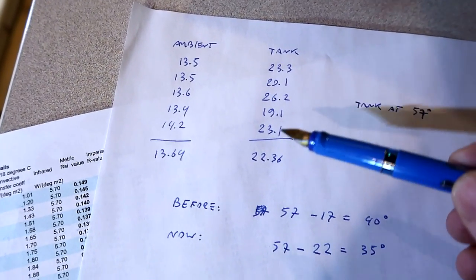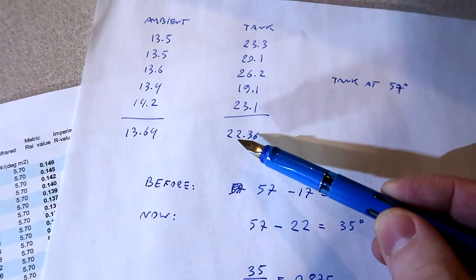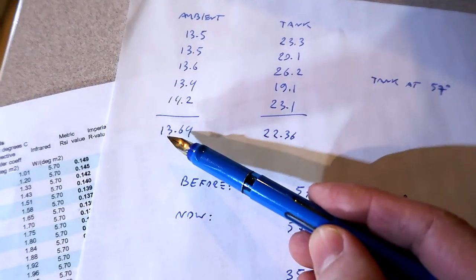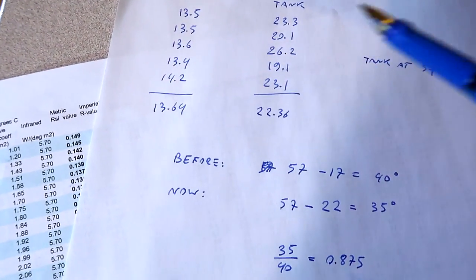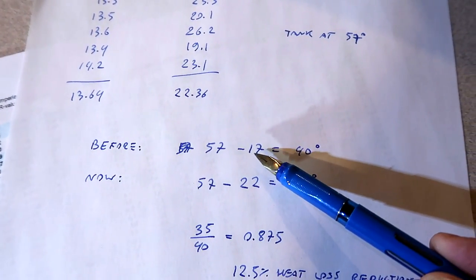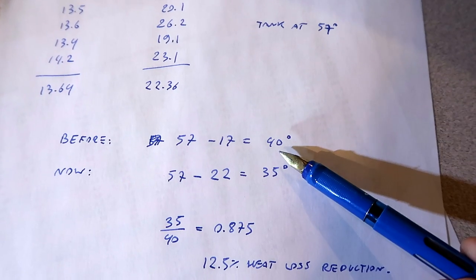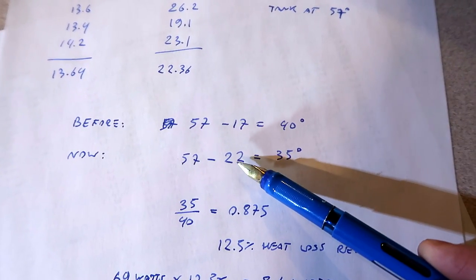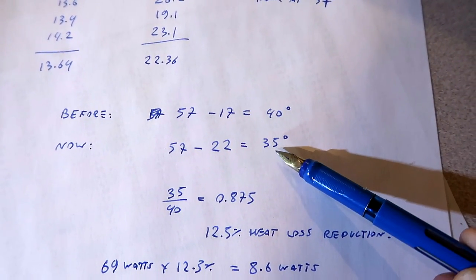I've taken a few readings behind the insulation, and the average is about 22.3 degrees. The ambient is about what it was before. Before we had 57 for the tank and the surface was 17, so 40 degree difference. Now the surface is 22 degrees, a 35 degree difference.